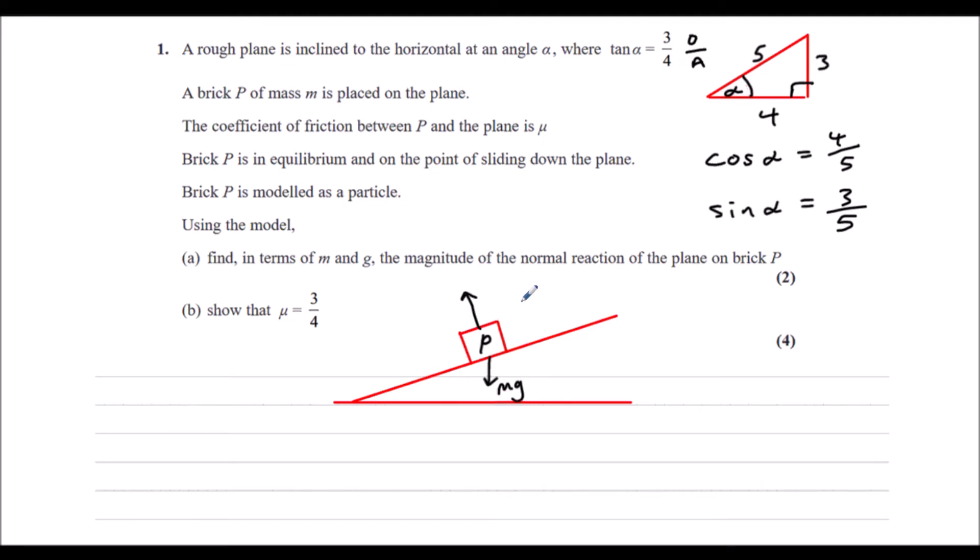Perpendicular to the plane, we have the normal reaction. That's R. And we've got a rough plane. We've got friction. So opposing the motion, stopping it from sliding down the plane. We're going to have friction, which is mu times r. And the angle there is alpha. And that will be the same angle as in between the weight and the perpendicular to the plane.